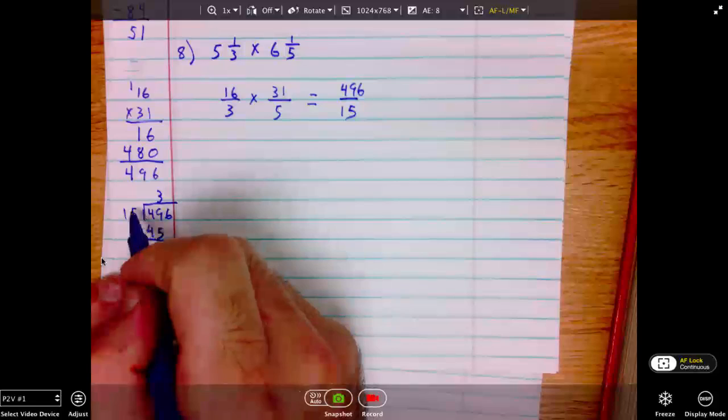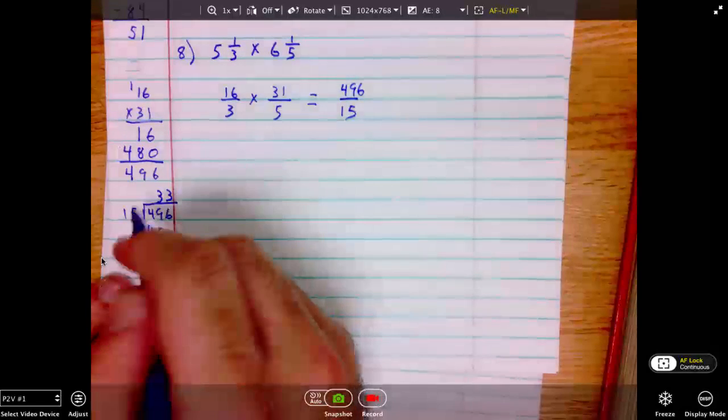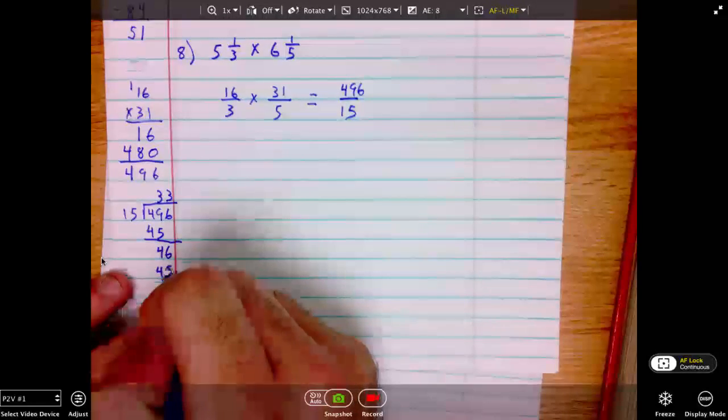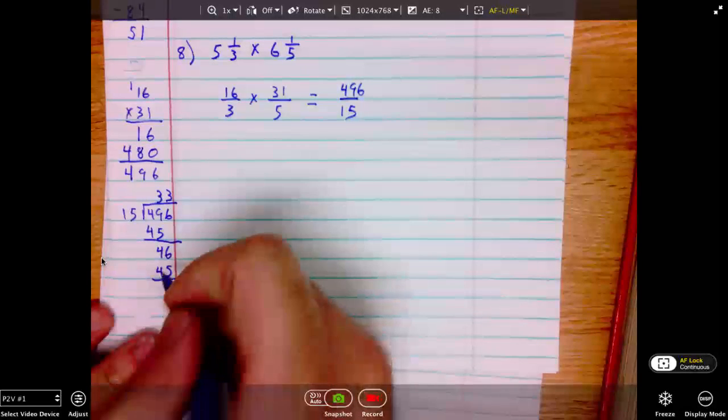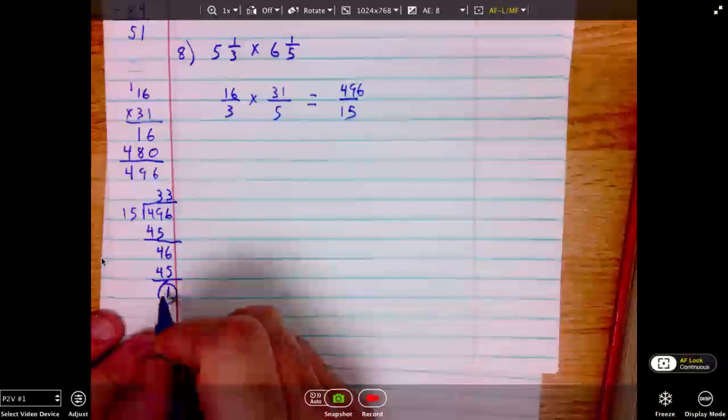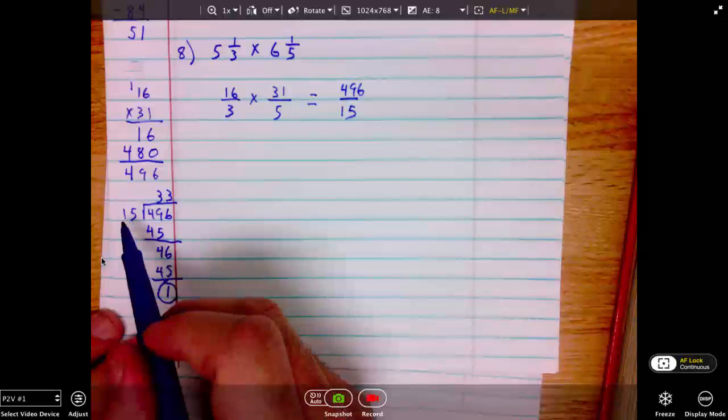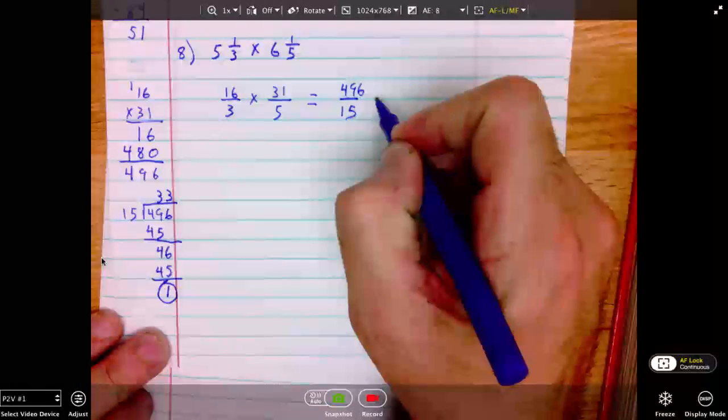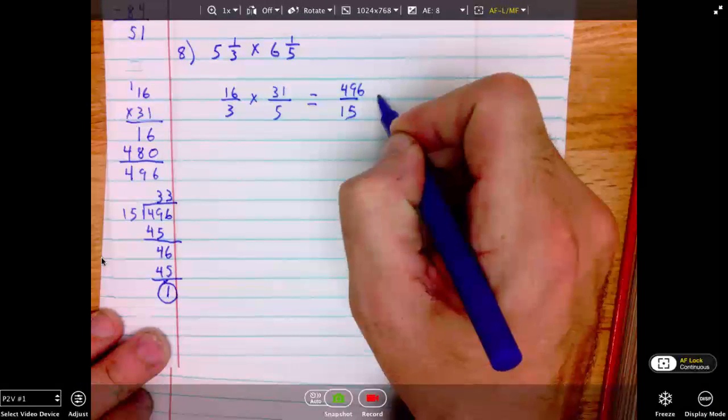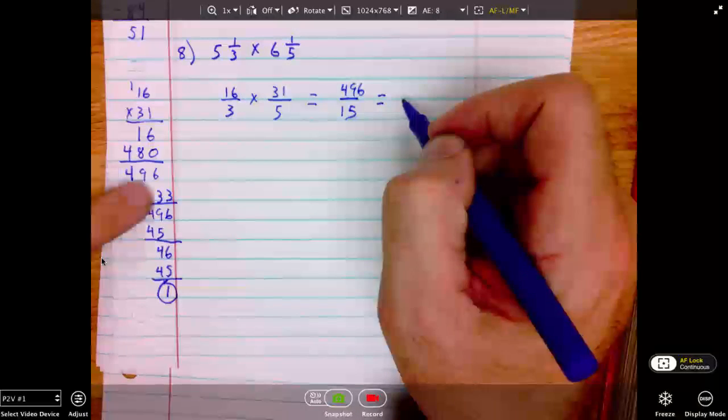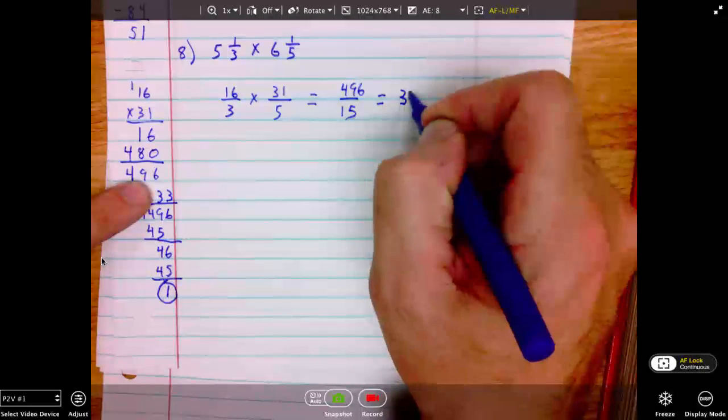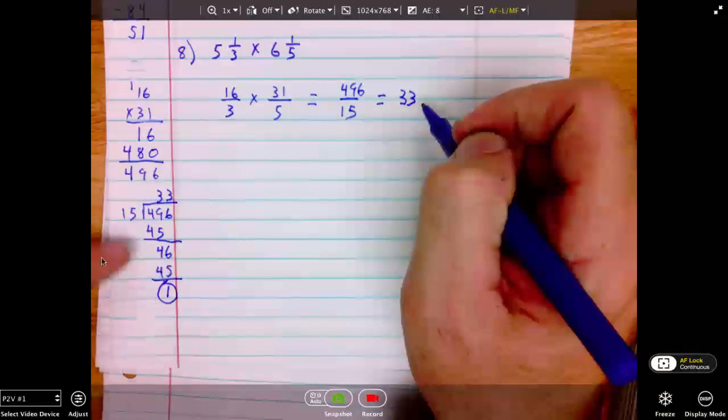Again, 15 into 46, 3 times. 3 times 15 will be 45. Subtracting leaves 1. This remainder, we will place over the divisor of 15. So, 496 divided by 15 is equal to 33 and 1 fifteenths.